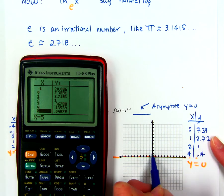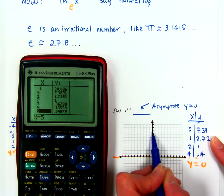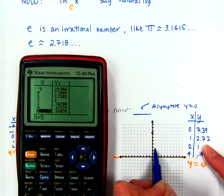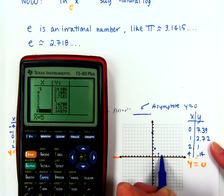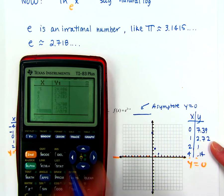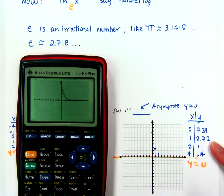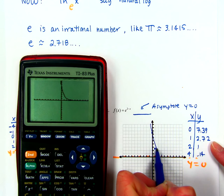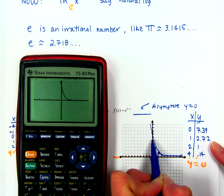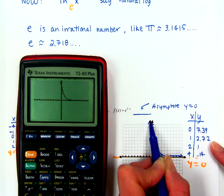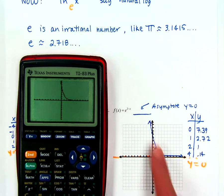At X equals 0 we're at about 7, a little bit above. Then 1 is 2.72, 2 is 1, and 4 is 0.1. Look at your graph and make sure that you draw on your paper what shows up on your calculator. The graph goes up forever and gets infinitely closer to the asymptote.